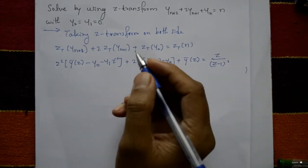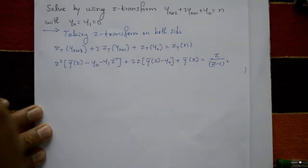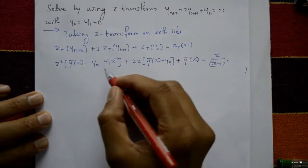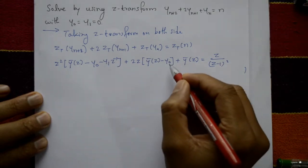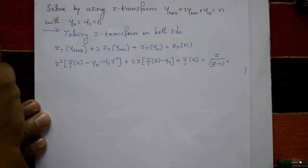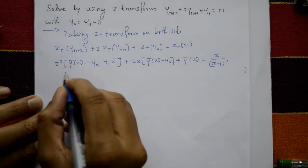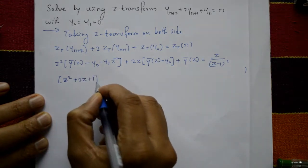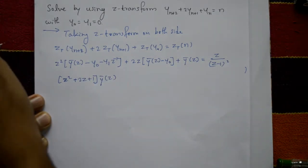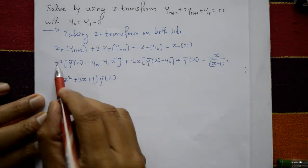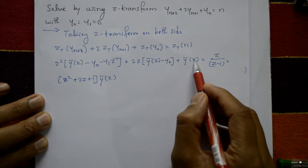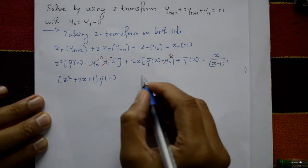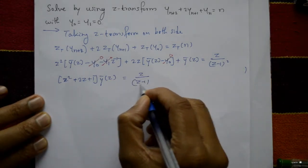Using the conditions y(0) = y(1) = 0, both are zero. Taking the common coefficient of Y-bar(z): (z² + 2z + 1)·Y-bar(z) equals z/(z−1)².